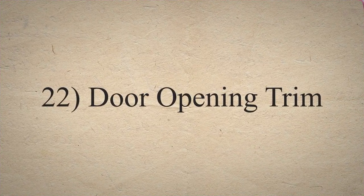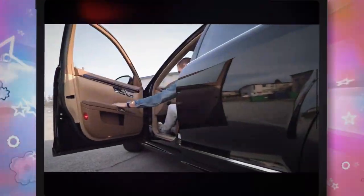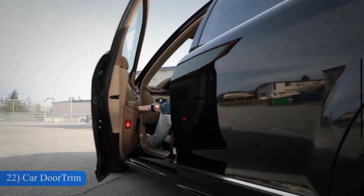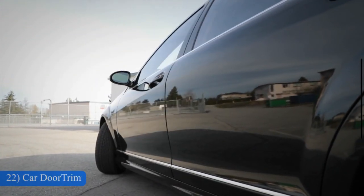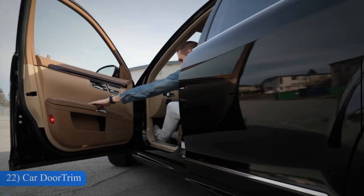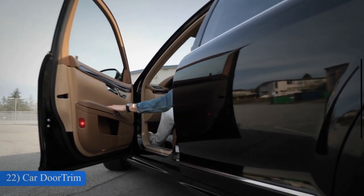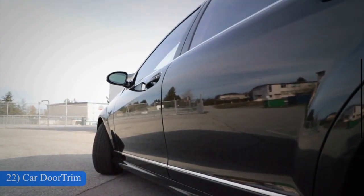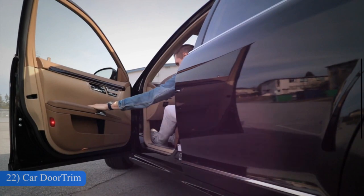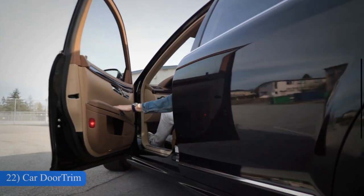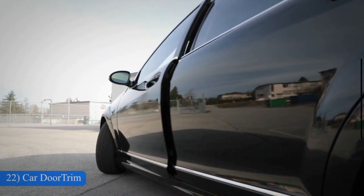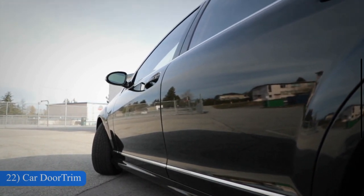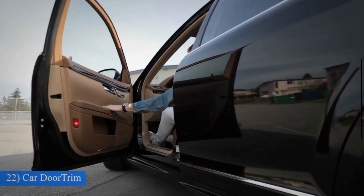22. Door Opening Trim. The door opening trim is also known as window molding. Rubber or plastic is most commonly used for the construction of door opening trim. It is connected to the vehicle body around the door area. It performs various functions such as shock absorption, interior sealing, and visual enhancement. The trim also helps to fix the window in its place and helps to protect the window glass.